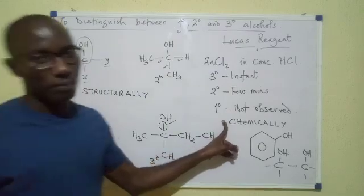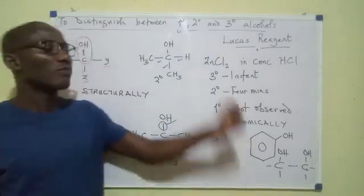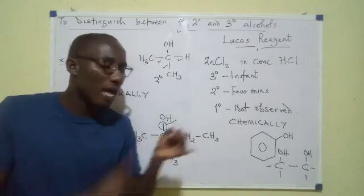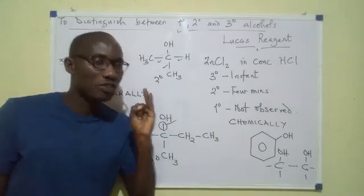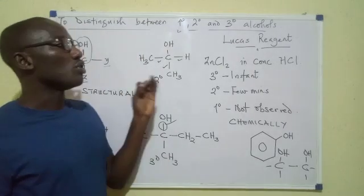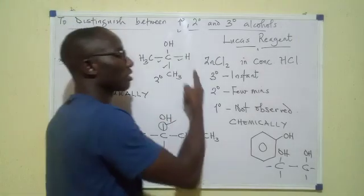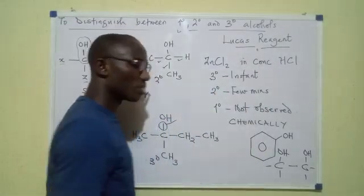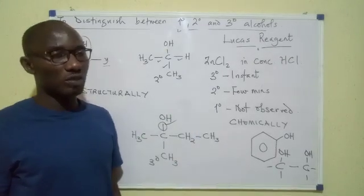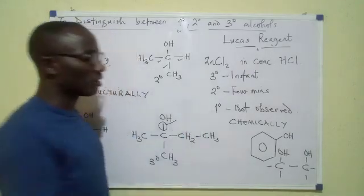Now let's look at a chemical test. When we have a compound confirmed to be an alcohol and specifically a monohydric alcohol, how do we find out its class? We use what is referred to as Lucas reagent, which is a mixture of zinc chloride in concentrated hydrochloric acid. Once we have that mixture, we have Lucas reagent.